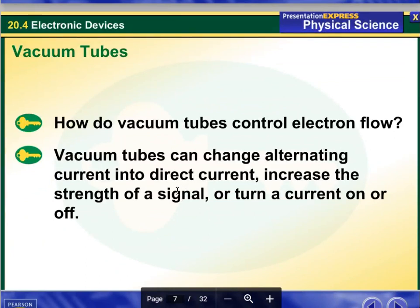Then we have vacuum tubes. How do vacuum tubes control electron flow? Vacuum tubes can change alternating current into direct current, increase the strength of a signal, or turn a current on or off.